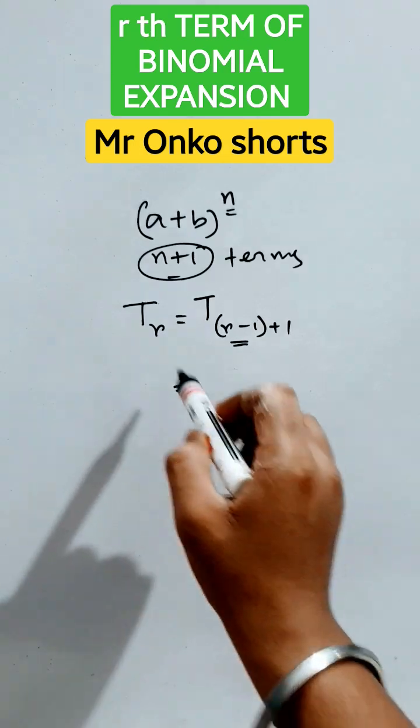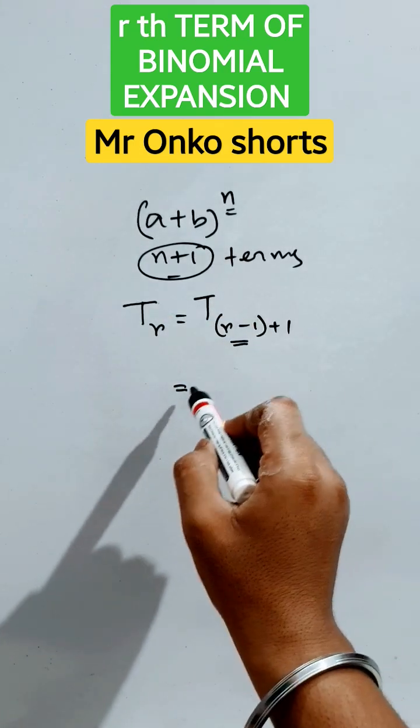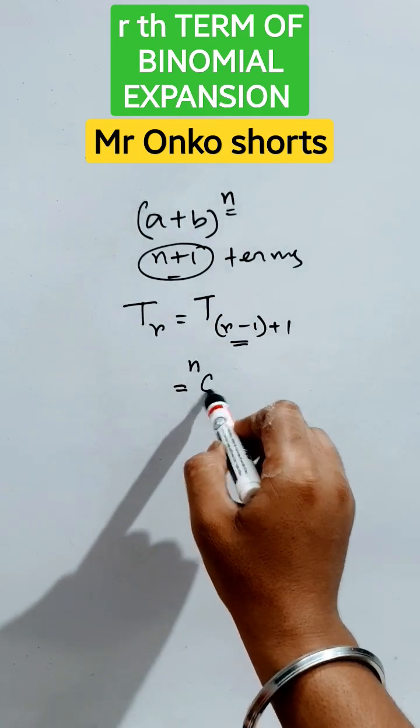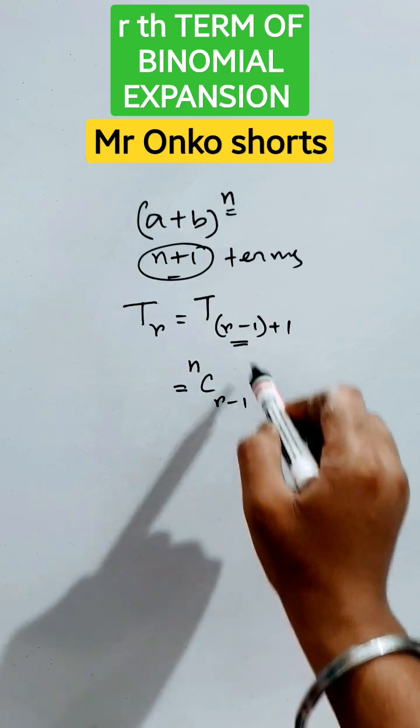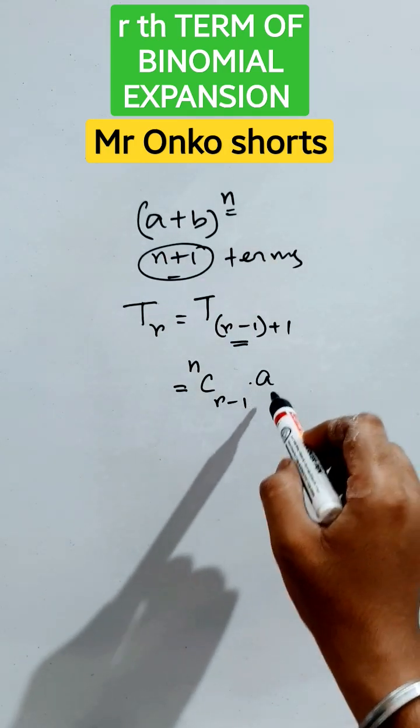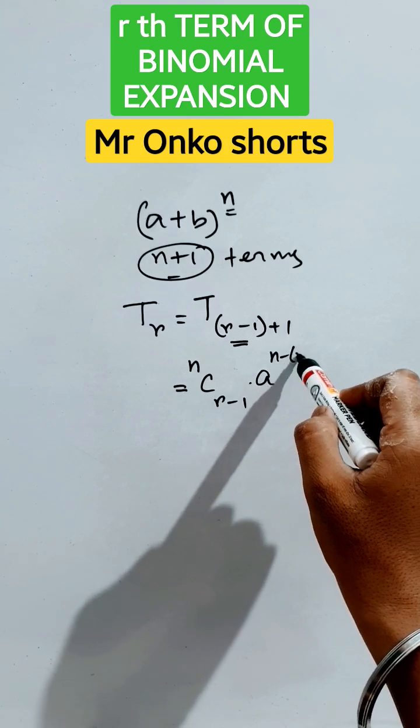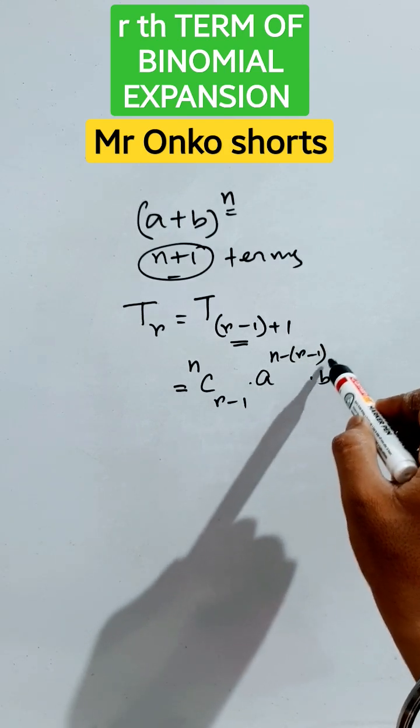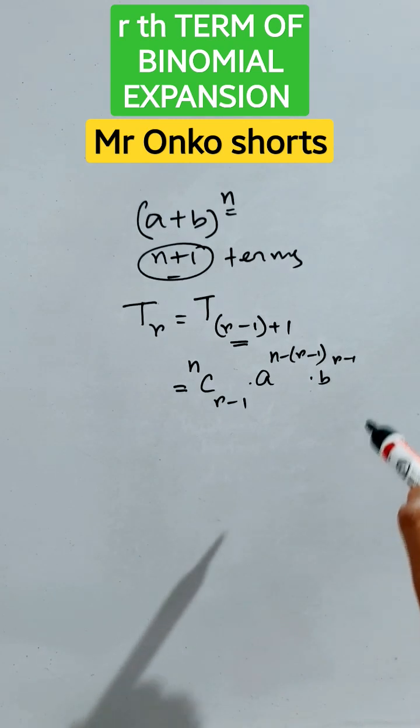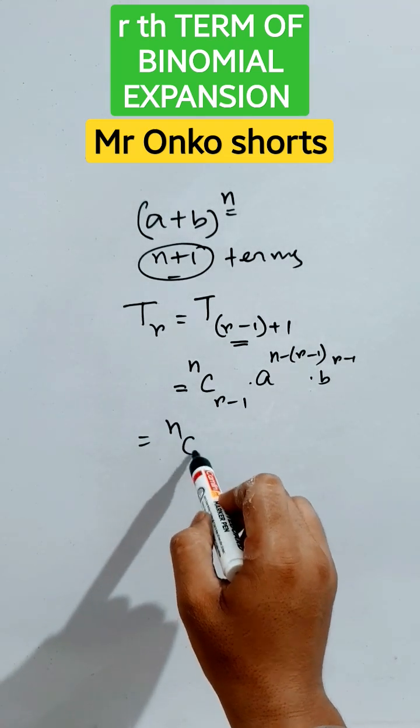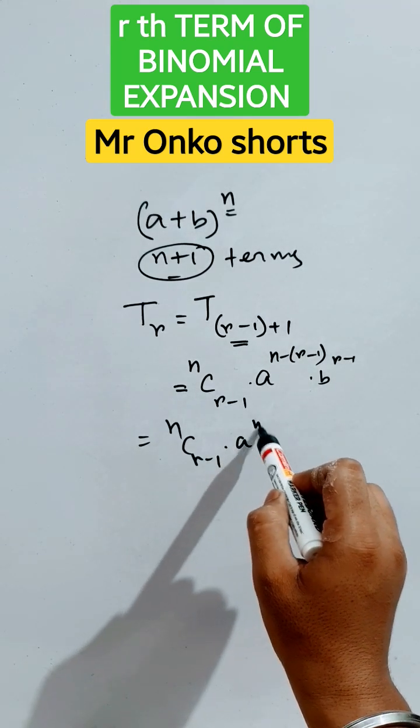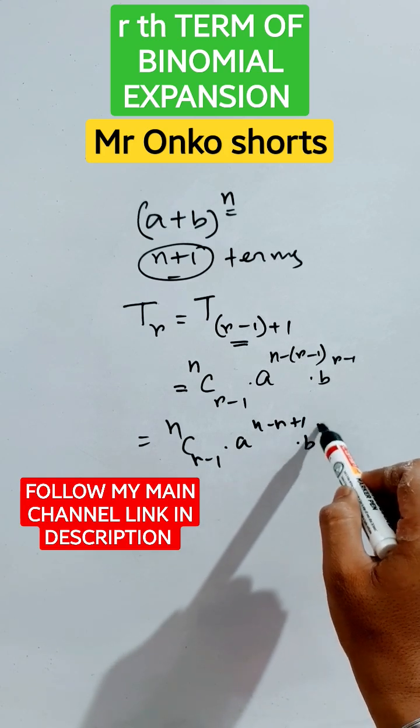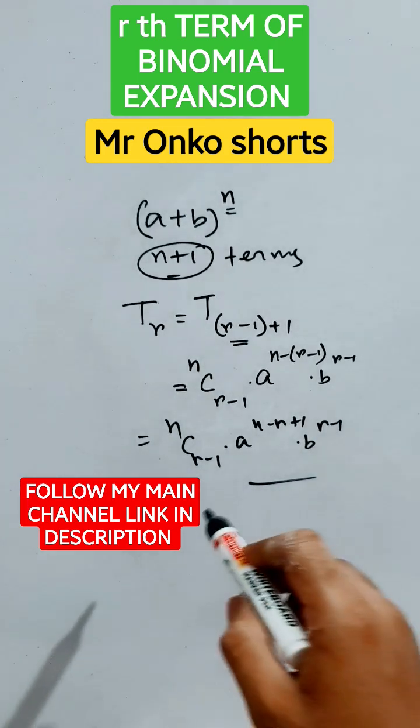Now let's see. This will be nCr-1 into the first term, which is a, so a to the power (n minus r minus one) into b to the power (r minus one). On simplification, it will be nCr-1 into a to the power (n minus r plus one) into b to the power (r minus one). Thus it will be solved.